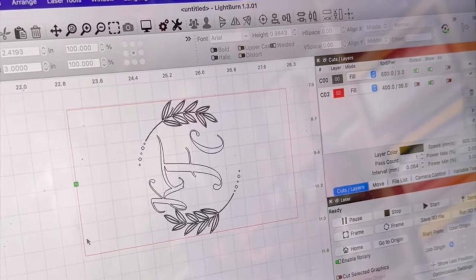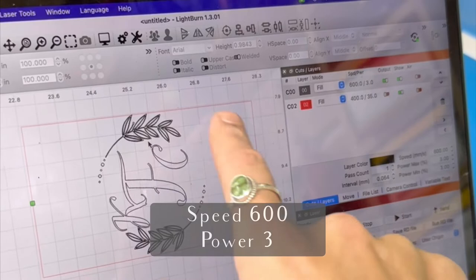So now on the computer, I uploaded the logo and created a rectangle to make sure that I can fit everything perfectly with the space allotted on the Stanley.